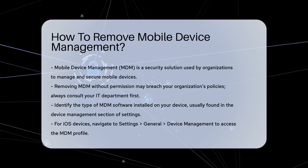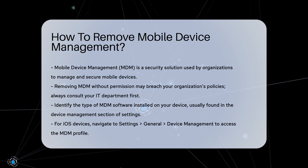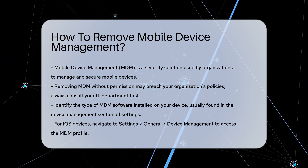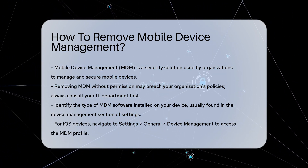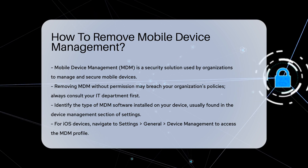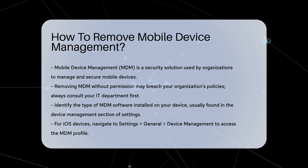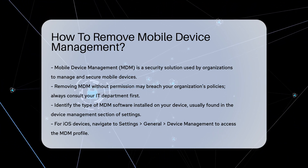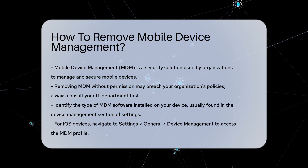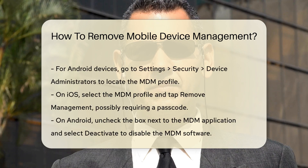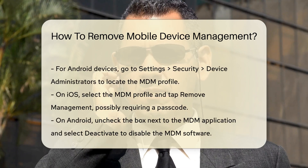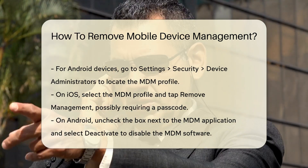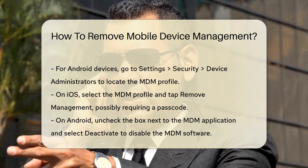Start by identifying the type of MDM software installed on your device. This information is typically found in the settings under the Device Management section. Once identified, access the MDM profile. On iOS devices, navigate to Settings, then General, and finally Device Management.